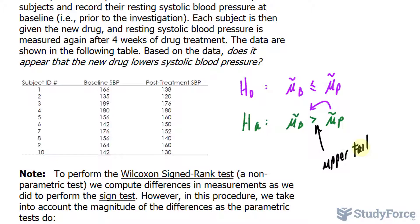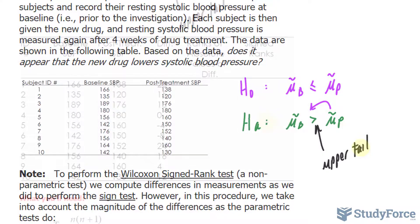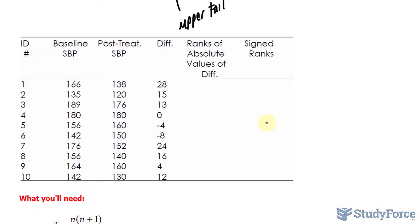Moving forward, what you want to do is find the differences by subtracting the post-treatment from the baseline. Write down all the differences in a new column in your table. Then based on the differences, you want to rank those values. In case that's confusing to you, here's what I mean. Here we have an extended table, and I've already gone ahead and found the differences for you. Remember, I subtracted this from that.